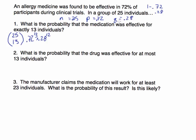Q equals 0.28, and that is the probability of quote-unquote failure. So we're looking for the probability that the medication was effective for exactly 13 individuals — in other words, P(X = 13). Let's open StatCrunch and put this information in.